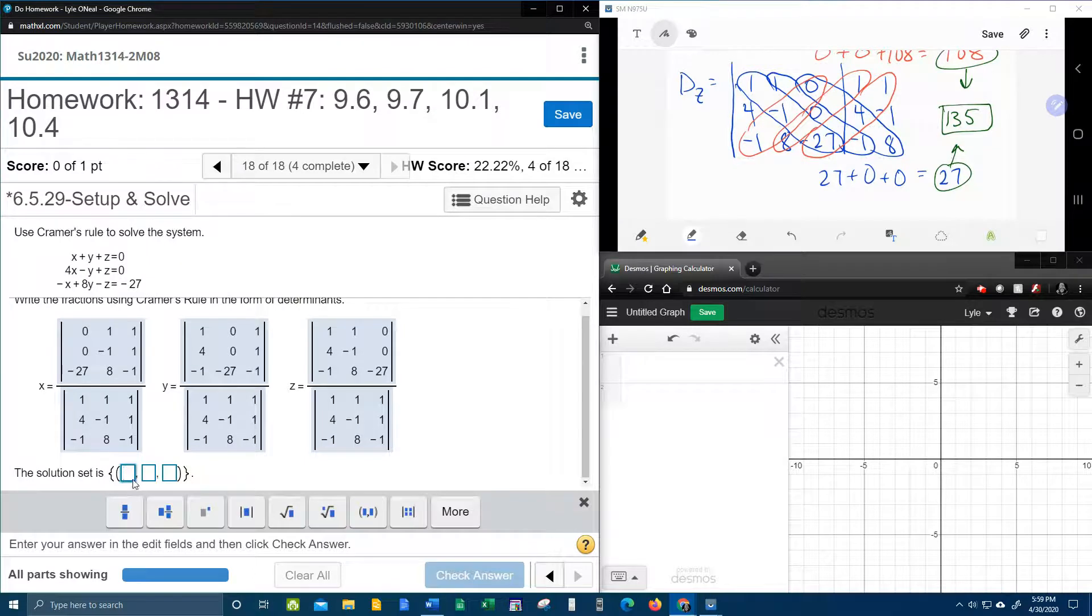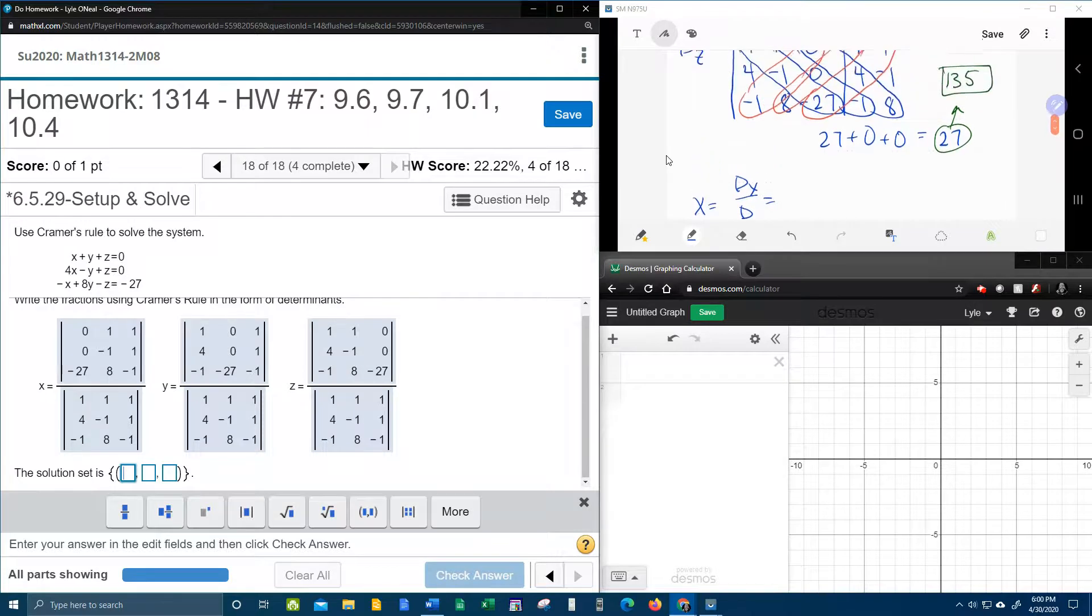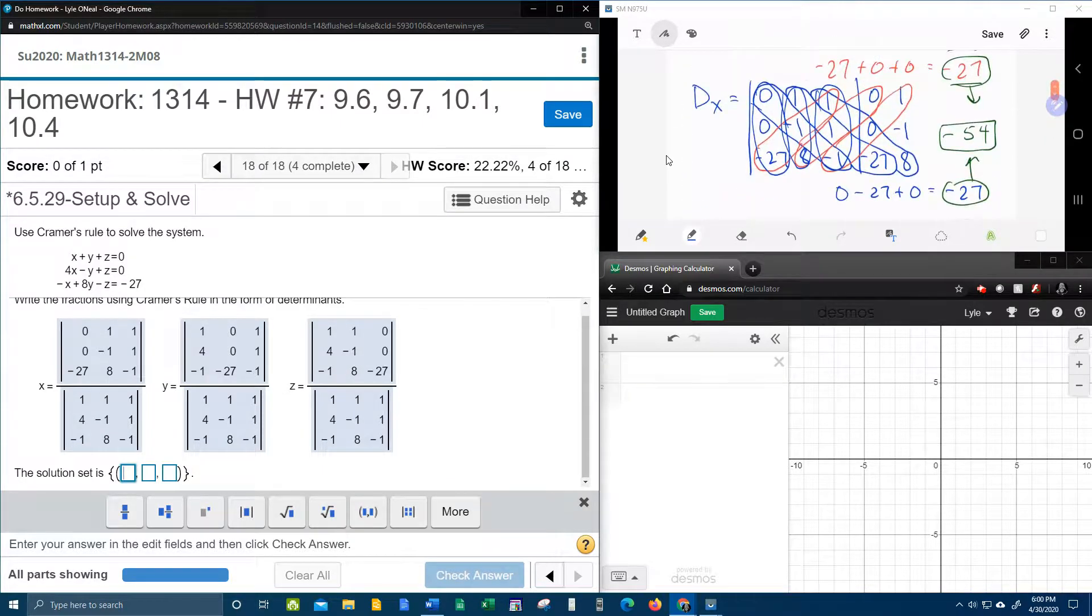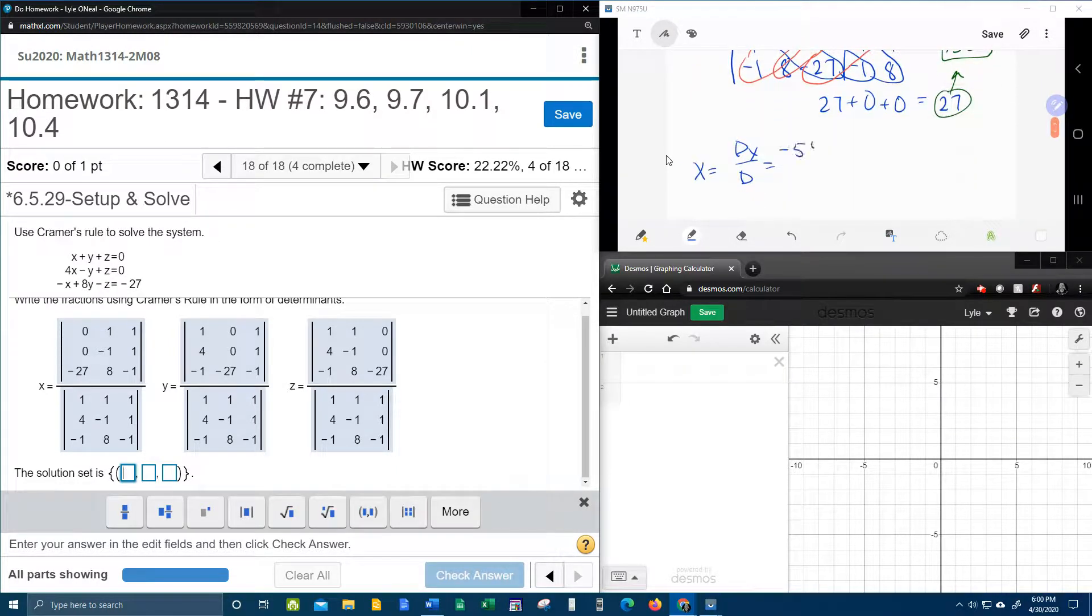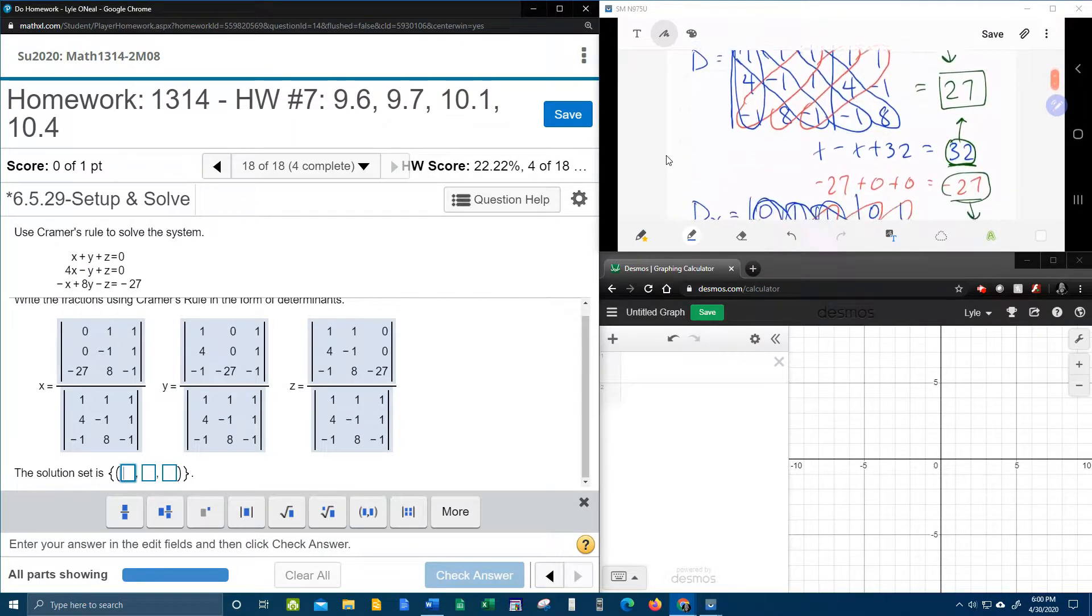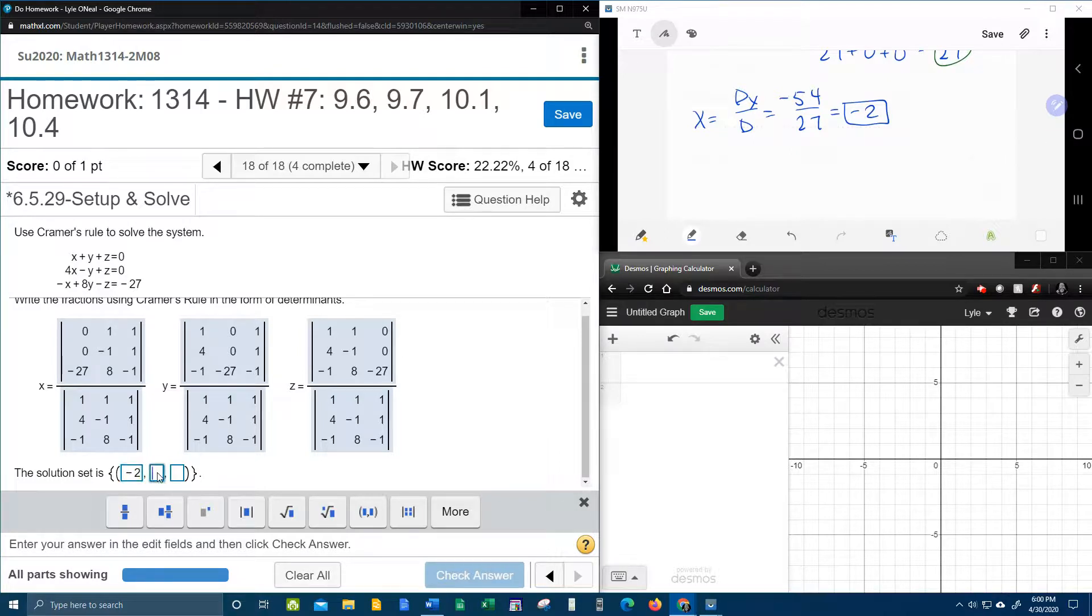Now, we can figure the solution set. All right, so now we're going to go over here to our window and show you how to get the ordered triple x, y, and z. So, remember that x is D sub x over D. So, if we scroll back up, D sub x was negative 54. And, regular D was 27. And, that's going to divide to make negative 2. So, there's our answer for the x coordinate, negative 2. Go on ahead and put that into MyLabMath.